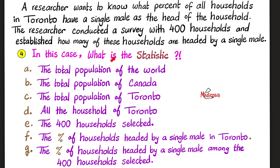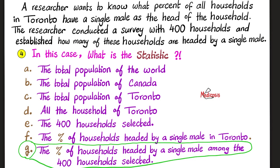Fourth, in the same case, what is the statistic? Is it A, B, C, D, E, F, or G? Please pause the video. The correct answer is: the statistic is the percentage of the households headed by a single male among the sample selected. So the parameter is among the entire population, but the statistic is among the selected sample. The parameter is for the many, whereas a statistic is for the few.